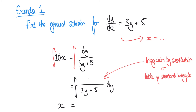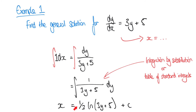The integral of 1 over (3y + 5) with respect to y can be solved by integration by substitution, or we can refer to a table of standard integrals. We're not going to go into integration by substitution in this video. What we find is that x equals (1/3) times the natural logarithm of (5 + 3y) plus an unknown constant c. This is the general solution to this first-order differential equation. Without any other information, this is as far as we can go.